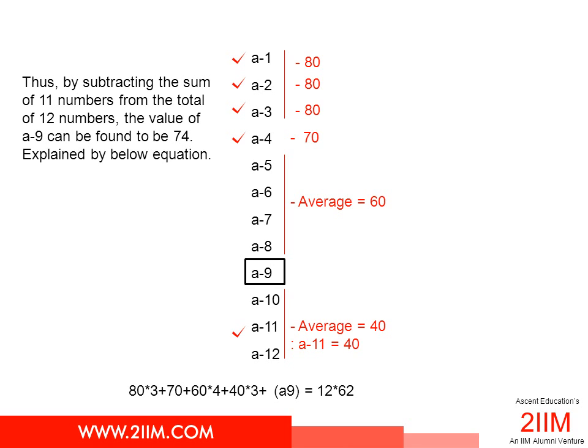Just going through the algebra: we know A1, A2, A3 — the sum of these three is 80 × 3. We know A4 is 70. We know the sum of A5, A6, A7, A8 is 60 × 4. We know the sum of A10 to A12 is 40 × 3. So adding all these plus A9 gives us 12 × 62, because 62 is the overall average. With this, we can find the exact score of A9.